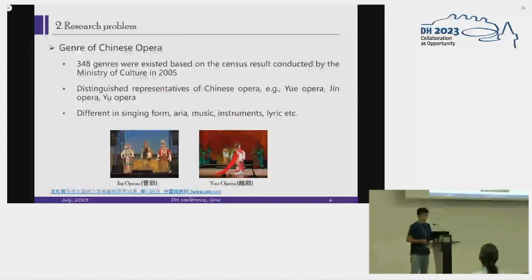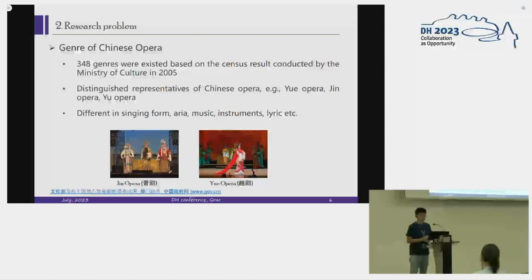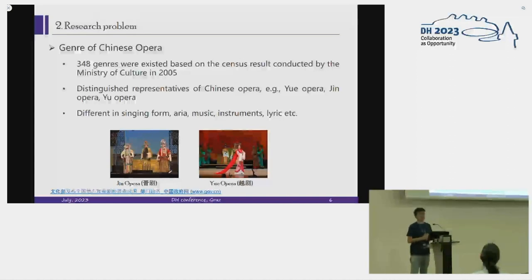The topic today is about automatic recognition of the genres of Chinese operas. After long-term development and evolution, over 300 genres existed based on census results conducted by the Ministry of Culture in 2005. Aside from the well-known operas such as Beijing Opera or Kun Opera, there are some famous genres in certain areas — for example, Yue Opera, which is popular in Shanghai and Zhejiang, and Jing Opera, popular in Shanxi. In these operas, the singing form, music instruments, and lyrics are very different, which makes each of them an independent genre.